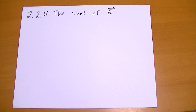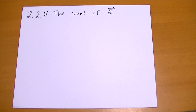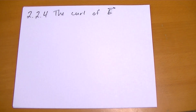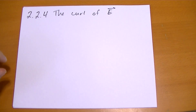2-2-4, the curl of E. This is our last stop before we get to the electric potential. The problem posed here is: let's figure out what the curl of E is. It should be fairly obvious why the curl is going to be zero just by thinking about how electric fields behave. So let's start with a simple point charge.